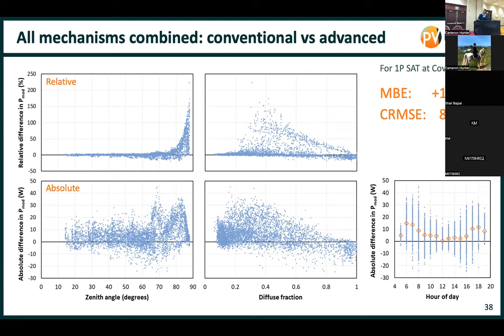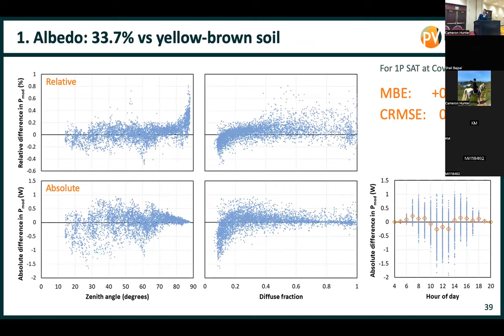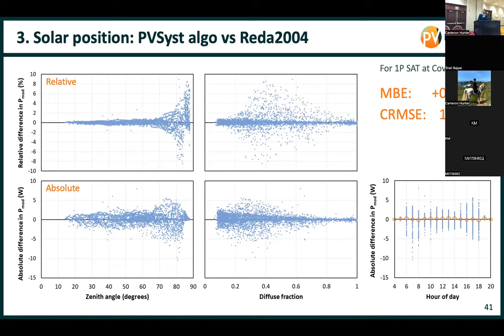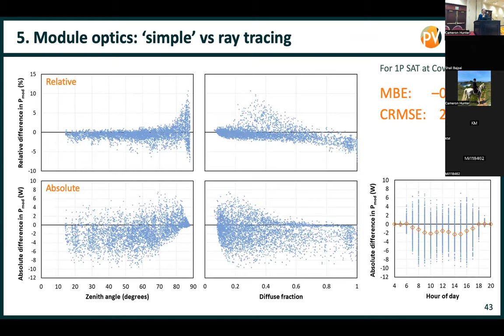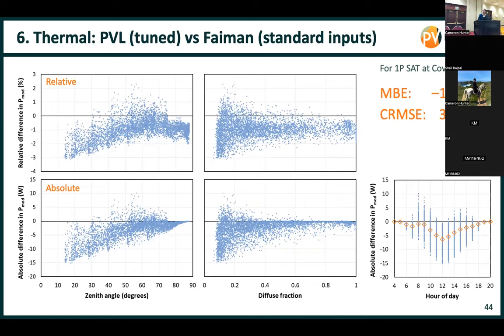Over the course of the day, conventional models predict a higher yield in the morning and the afternoon, roughly the same on average when modules are flat. But there's still a lot of scatter at all times of day. Each of the advanced models is influencing these results differently depending on their dependencies on zenith angle and diffuse fraction.